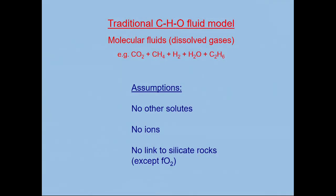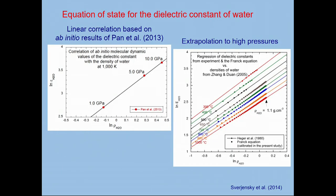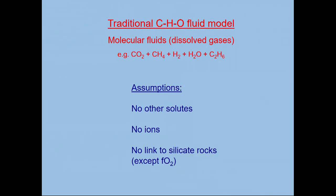Before the Deep Carbon Observatory started, as many of you know, the typical picture of a fluid in the deep earth contained a bunch of simple molecules, including water and various carbon molecules, as shown in the top here. These are assumed to simply mix without specifically interacting through the oxidation state of the system. Importantly, there are no other solutes in the system and no other ions in the fluid.